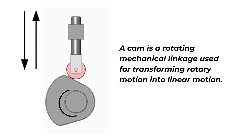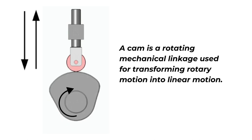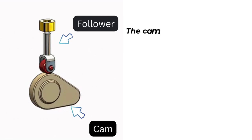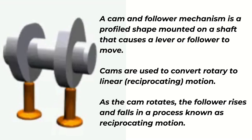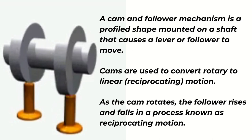A cam is a rotating mechanical linkage used for transforming rotary motion into linear motion. The cam and follower is a mechanical device used to achieve the desired reciprocating motion. The cam is the rotating member and the follower is the reciprocating member. A cam and follower mechanism is a profile shape mounted on a shaft that causes a lever or follower to move. Cams are used to convert rotary to linear motion.